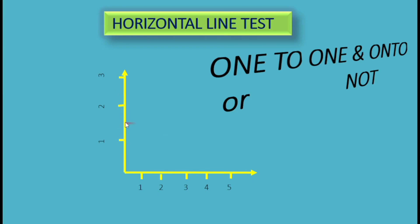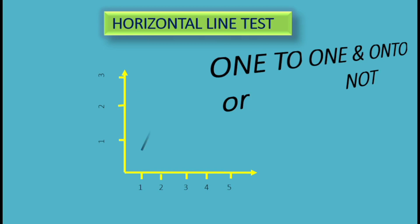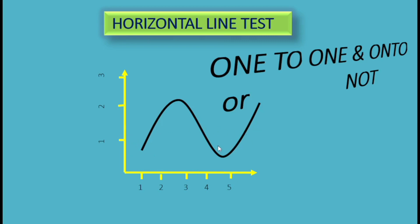When we draw a horizontal line, two cases arise. In the first case, if we draw a horizontal line and the horizontal line meets the curve at more than one point — that is, it intersects the function at more than one place — then it is not a one-to-one function.